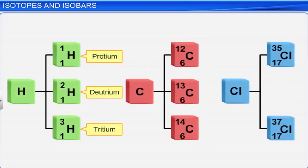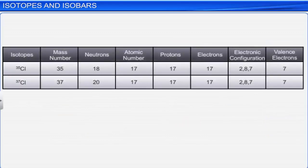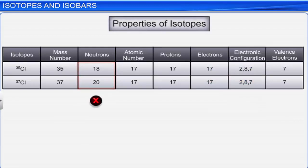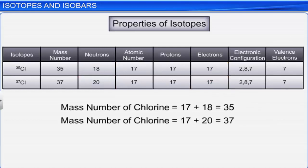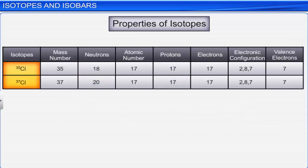Isotopes of elements other than hydrogen do not have special names; they are represented by indicating the mass number on the element's symbol. The chemical properties of an element depend on the number of electrons and their configuration within an atom, not on the number of neutrons. Hence, isotopes exhibit similar chemical properties. However, as the mass of isotopes differs due to different numbers of neutrons, their physical properties differ from each other.